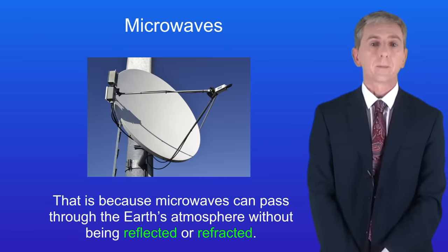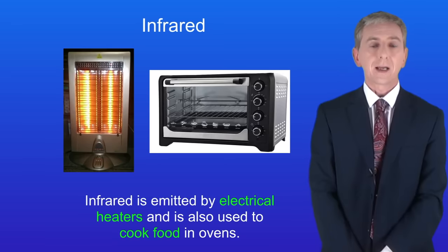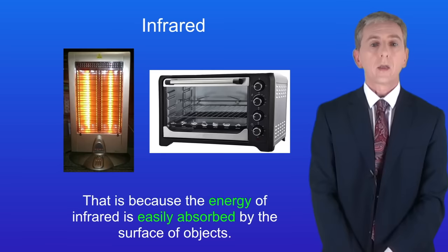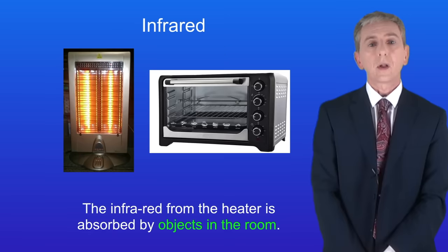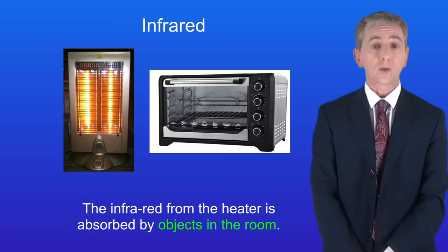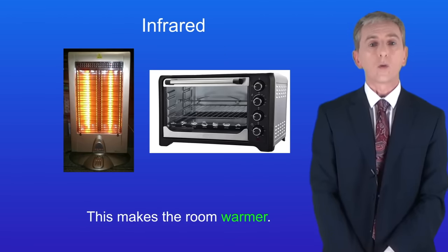Okay we're going to look now at infrared. Infrared is emitted by electrical heaters and it's also used to cook food in ovens. That's because the energy of infrared is easily absorbed by the surface of objects. For example the infrared from a heater is absorbed by objects in the room and this makes the room warmer.